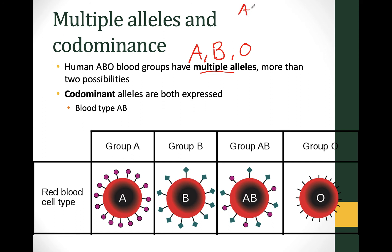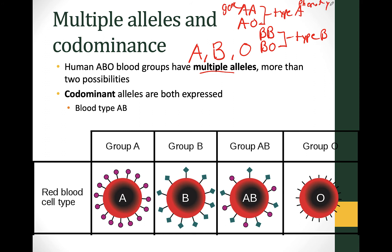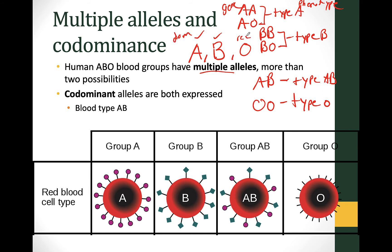You can be AA or AO — both will be type A. You can be BB or BO — both will be type B. That's the genotype giving the phenotype. Your genotype can be AB, which gives you type AB blood. Your genotype can be OO, which gives type O. The reason there are two genotypes for A and B is that A and B are both dominant alleles and O is recessive. When A and O are together, the dominant A covers up O giving type A; when B and O are together, B covers up O giving type B.